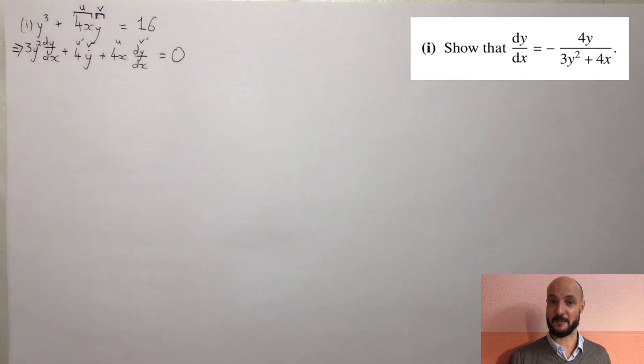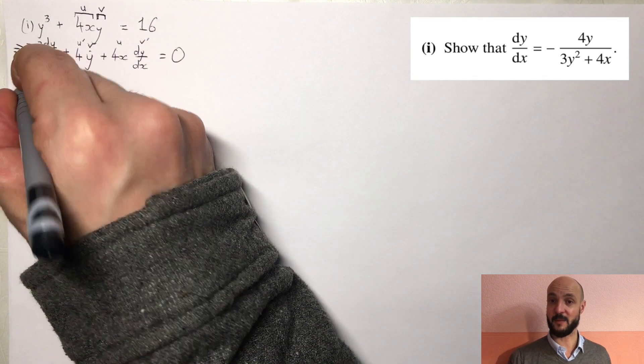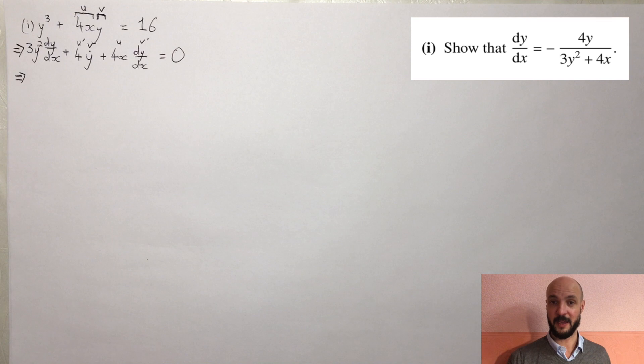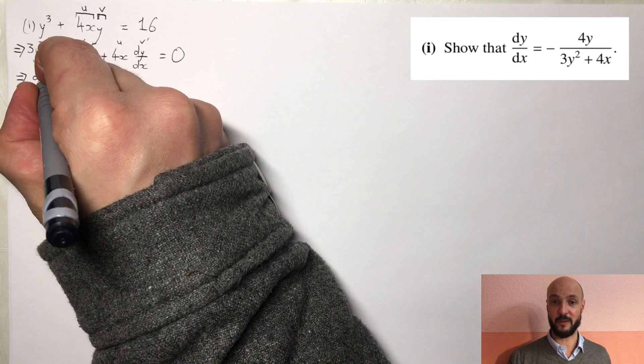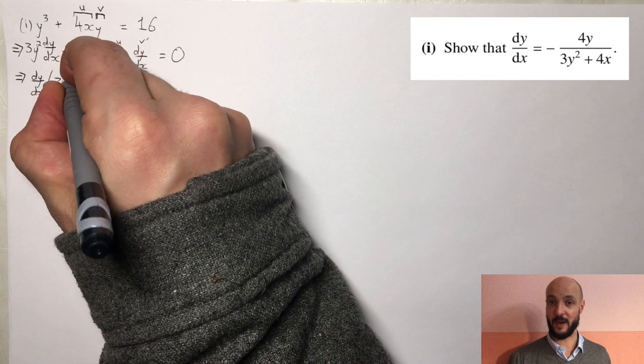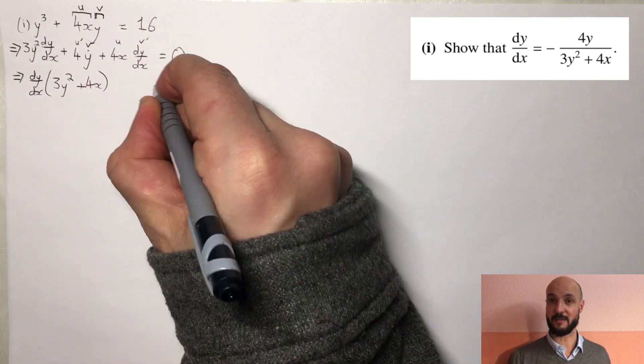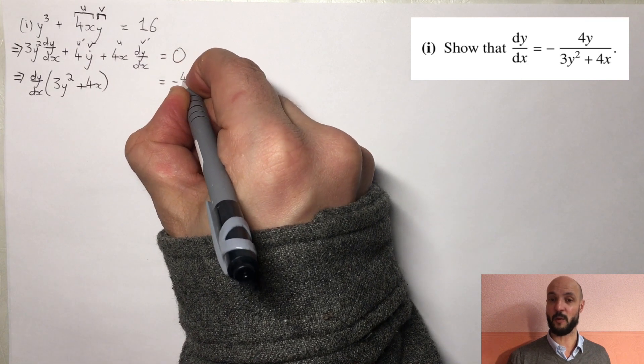So to summarize, 3y squared times dy/dx plus 4y plus 4x dy/dx equals 0. And then we can factorize to give us dy/dx times 3y squared plus 4x equals minus 4y.